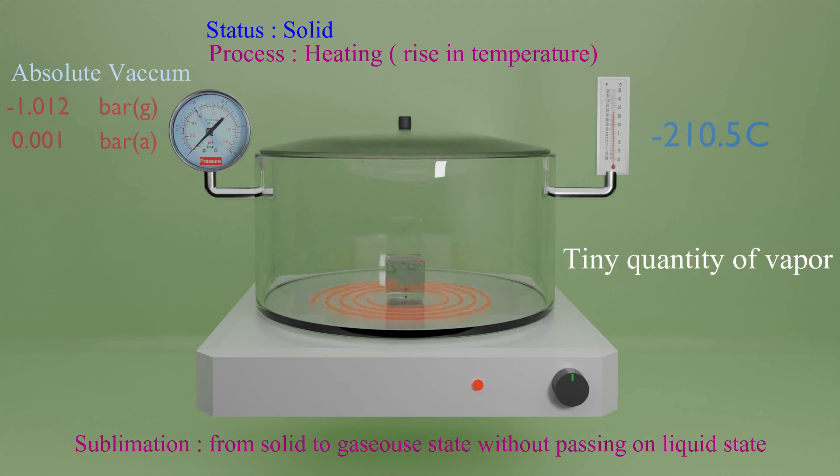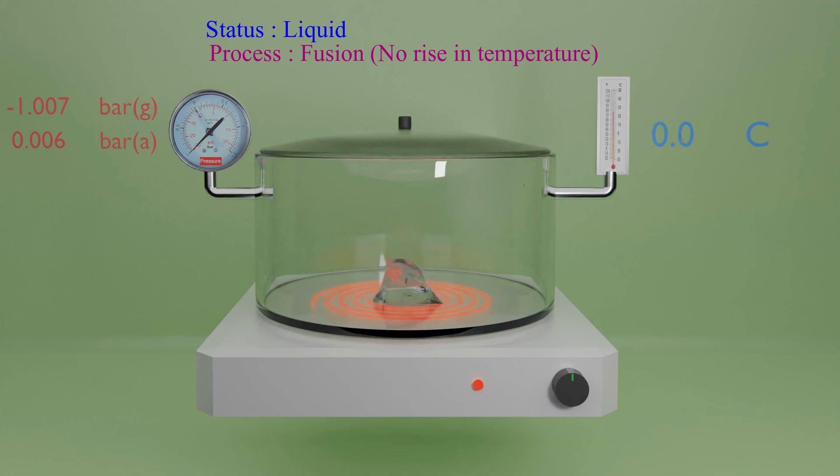Initially, the temperature of the ice rises with a very small amount of water vapor. Here the melting phase of ice begins and we notice that the pressure and temperature remain constant.